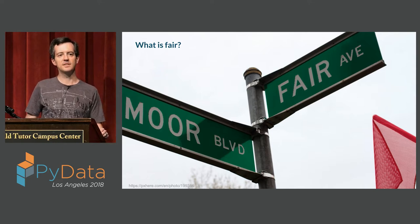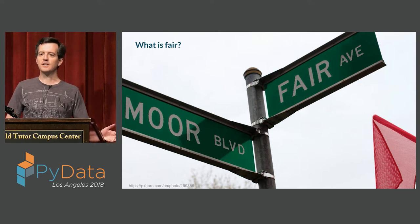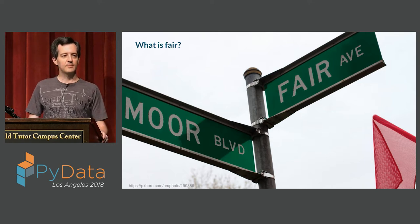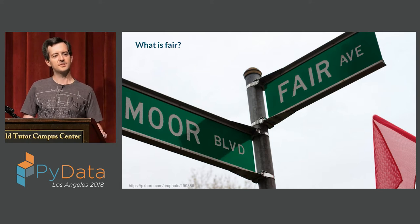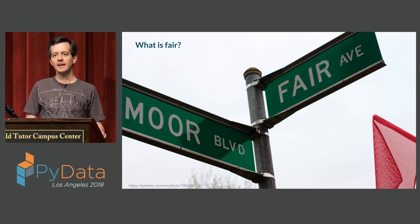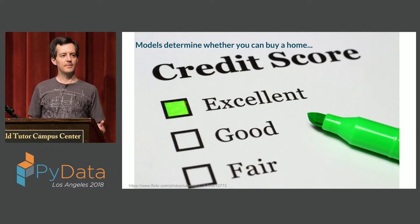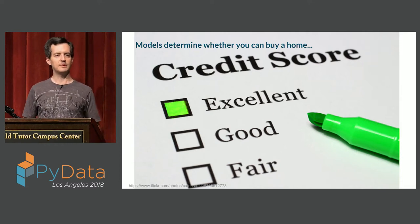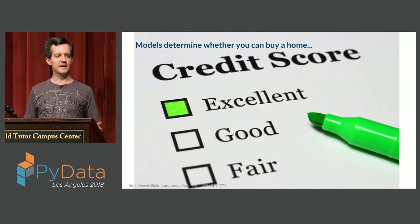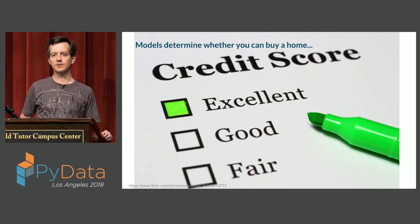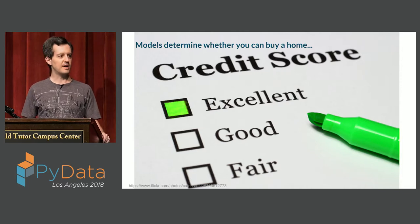Machine learning models get used in a lot of places nowadays, and some of these places are very consequential. For example, most people don't have enough cash to buy a house straight up, so they need to borrow money. And people that lend money want to make sure that they're lending to people who can pay that money back. In order to make these decisions at scale very quickly, they turn to machine learning models.